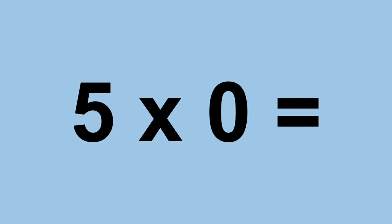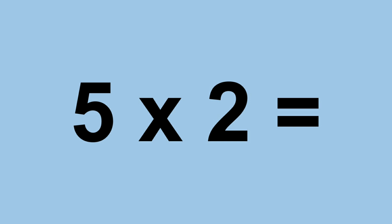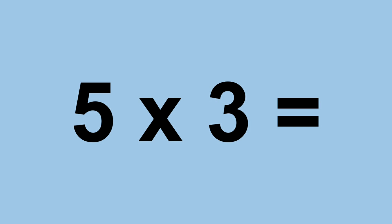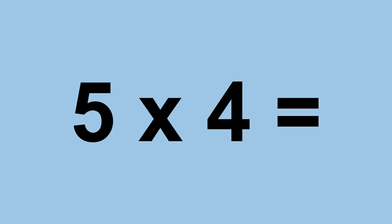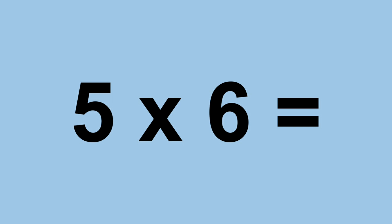5 times 0 equals 0. 5 times 1 equals 5. 5 times 2 equals 10. 5 times 3 equals 15. 5 times 4 equals 20. 5 times 5 equals 25. 5 times 6 equals 30. 5 times 7 equals 35.